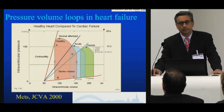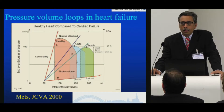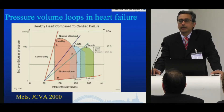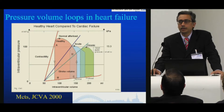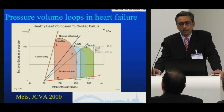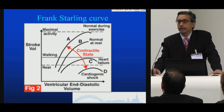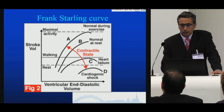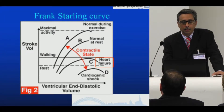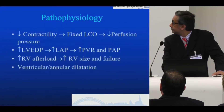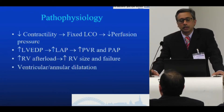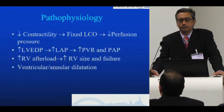Let's look at the pathophysiology of heart failure. The decrease in contractility and small pulse pressure usually means that these patients have got a small stroke volume. The increase in afterload will make the stroke volume even smaller. Despite an increase in the LV end-diastolic volume, you will not see an increase in stroke volume. This decrease in contractile state usually causes a low fixed cardiac output state and decreased perfusion pressure.